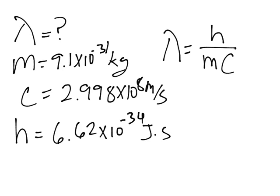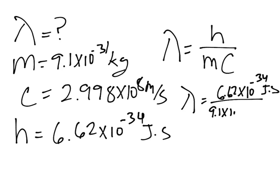So we simply have to plug in the values. So wavelength will be equal to 6.62 times 10 to the negative 34 joules times second over 9.1 times 10 to the negative 31 kilograms times 2.998 times 10 to the 8 meters per second. And we should get our answer in meters.